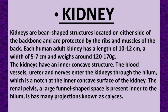Each human adult kidney has a length of 10–12 cm, a width of 5–7 cm, and weighs around 120–170 grams. The kidneys have an inner concave structure. Blood vessels, ureter, and nerves enter the kidney through the hilum, which is a notch at the inner concave surface of the kidney.